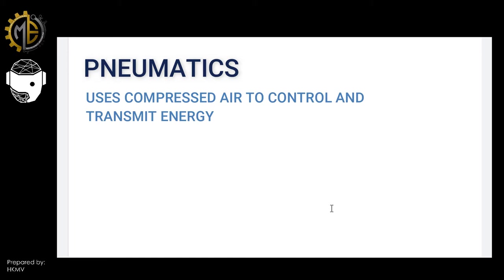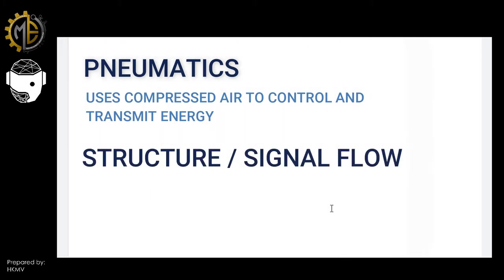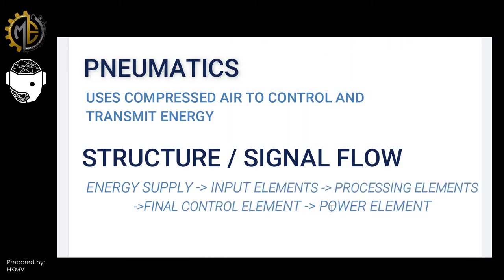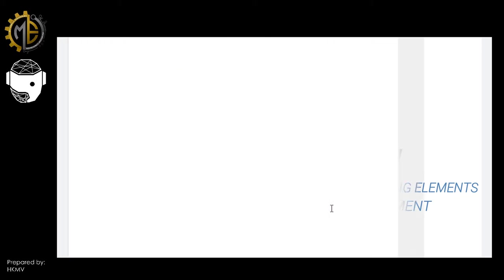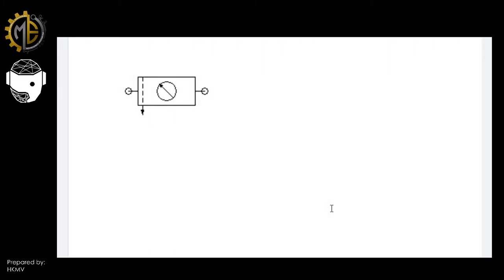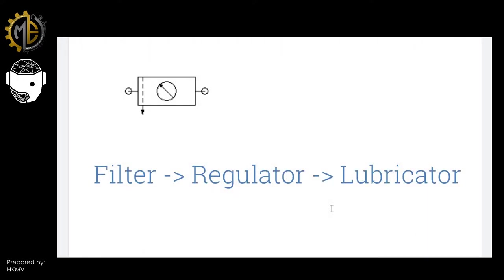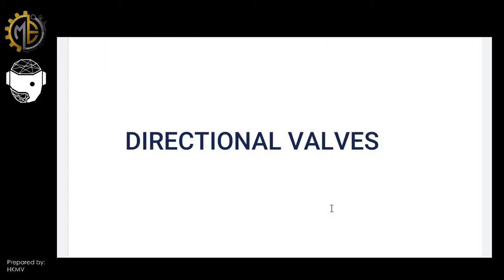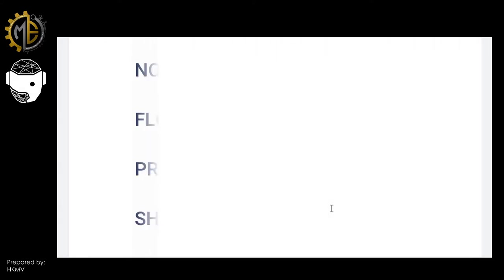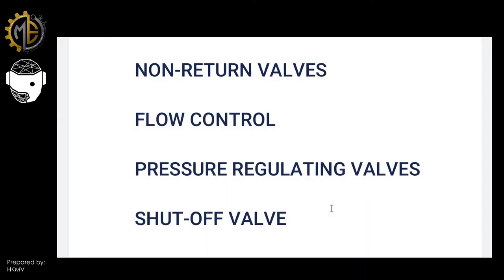When you design a pneumatic system, it follows a certain structure and signal flow. You have your energy supply, input elements, processing elements, control elements, and power components. We also learned the use of air service units for our supply air or energy element — from the actuator it will go through a filter, pressure regulator, and lubricator before it enters our system. We also learned the different types of valves used in pneumatic systems, including directional valves, non-return valves, flow control valves, pressure regulating valves, and shut-off valves.